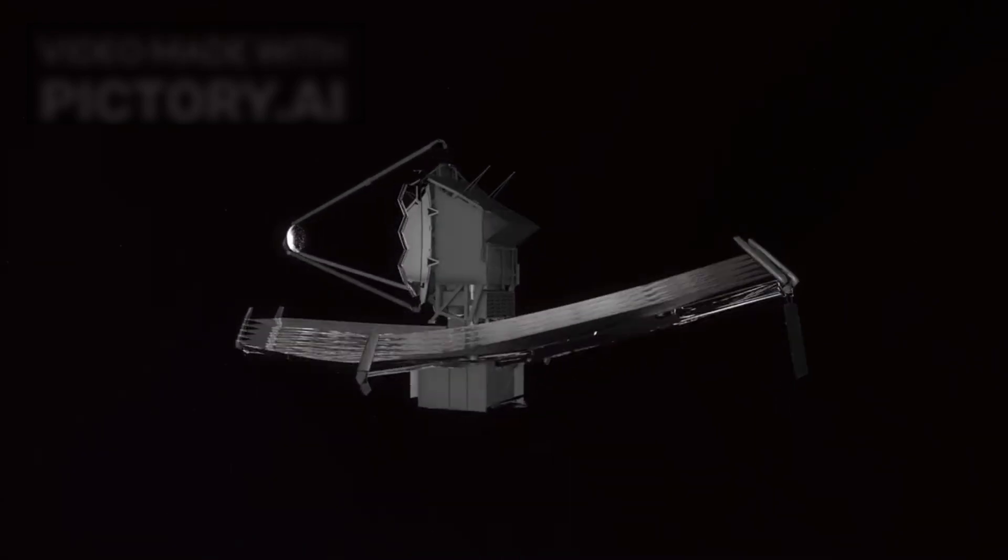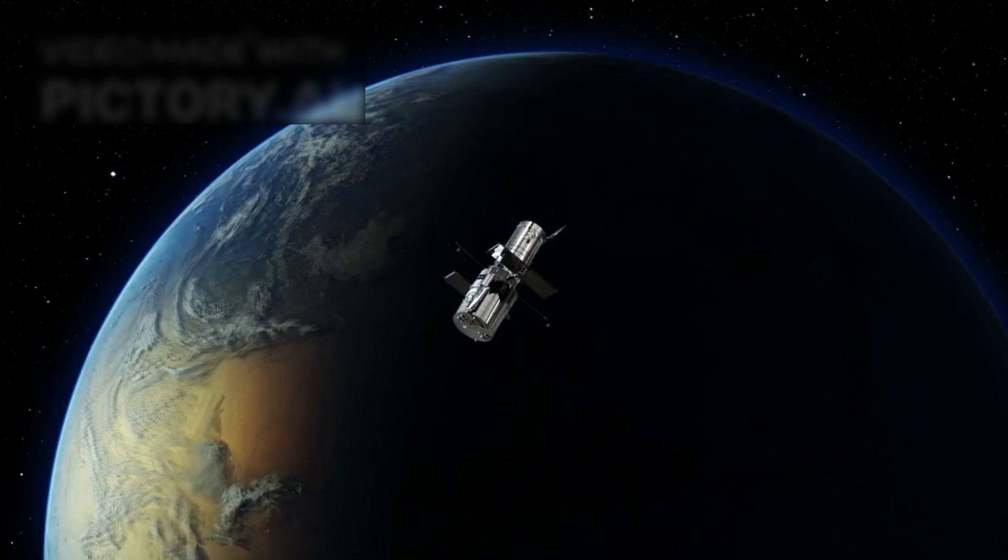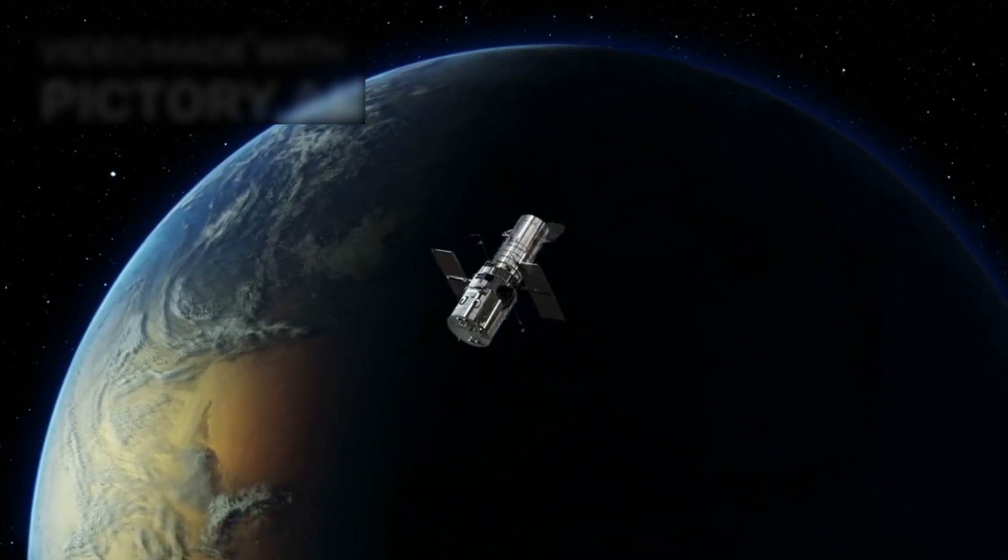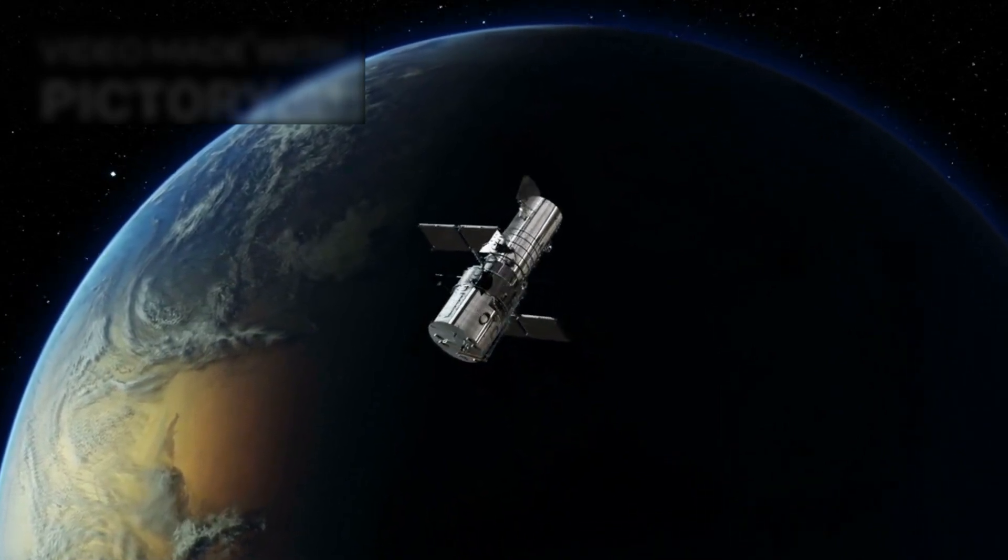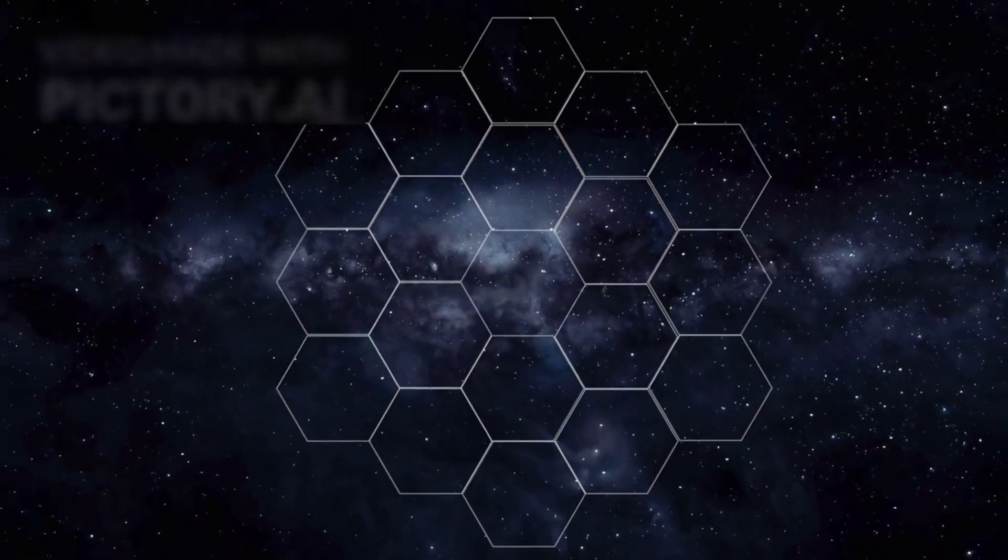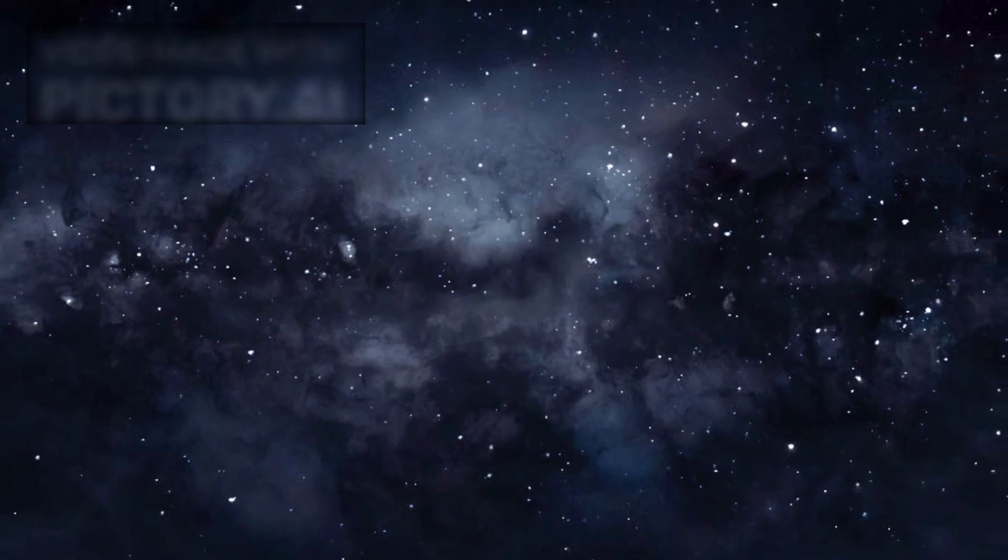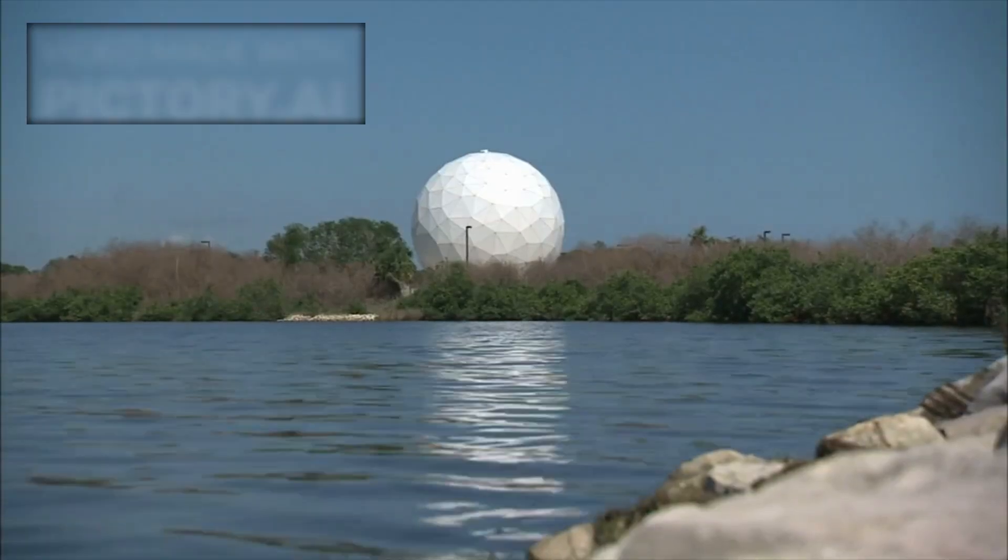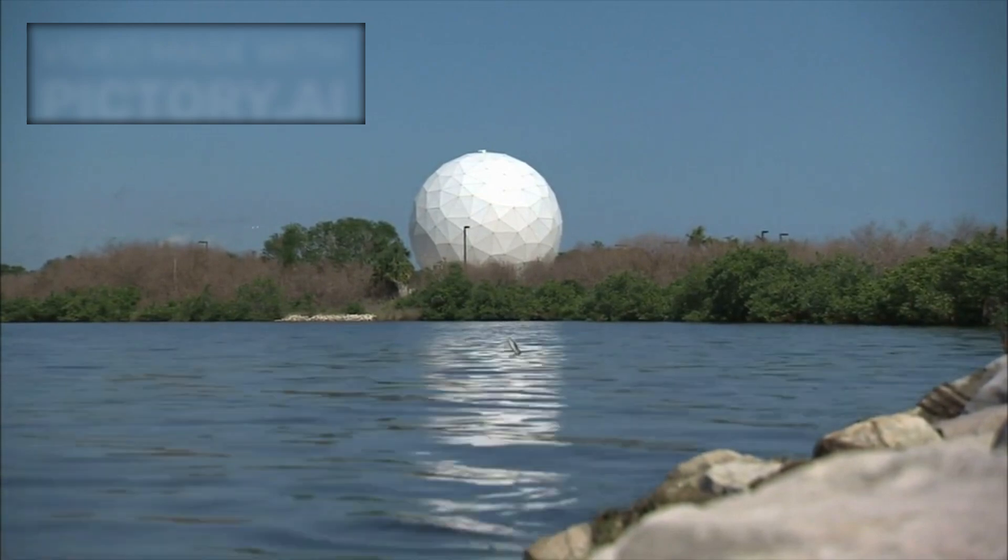The James Webb Space Telescope, or JWST, represents the pinnacle of astronomical engineering. It is the successor to the legendary Hubble telescope and is capable of peering deeper into space, and further back in time, than any human-made device ever created. Equipped with incredibly sensitive infrared sensors and a vast gold-coated mirror array, JWST has given humanity a new pair of eyes, allowing us to observe galaxies as they appeared over 13 billion years ago. Its findings are already transforming our understanding of the cosmos, but some of what it has uncovered challenges everything we thought we knew.